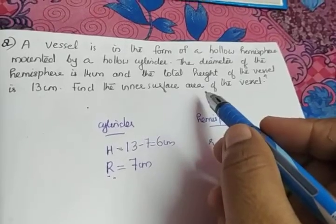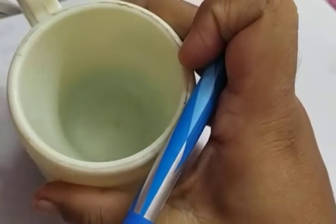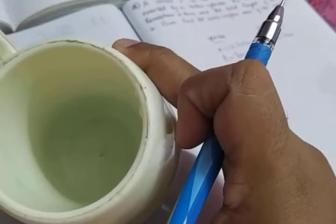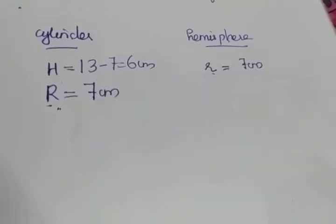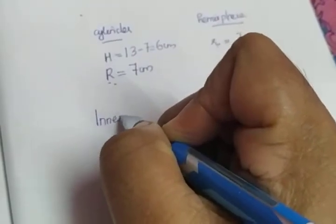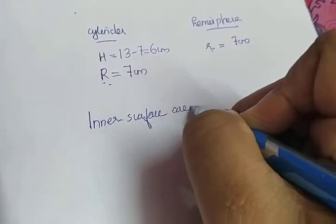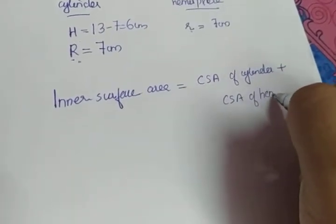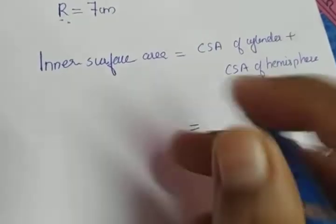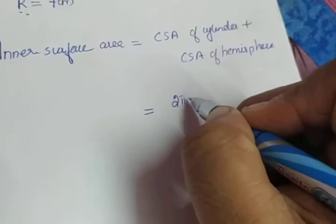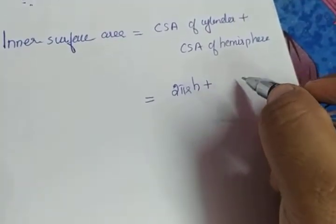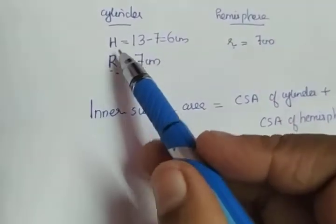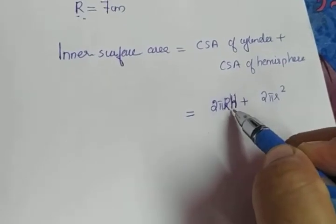We have to find the inner surface area. Inner surface area means we add the CSA of the cylinder and the CSA of the hemisphere. So the required inner surface area equals CSA of the cylinder plus CSA of the hemisphere, which is 2πRH + 2πr². Here it is 2π capital R times capital H because we notated them as capital R and capital H, so we must use the correct values.